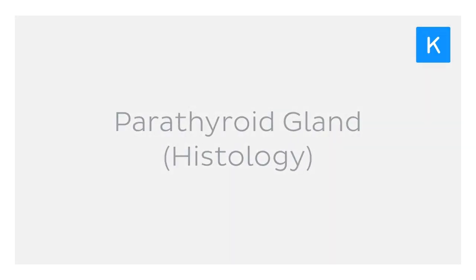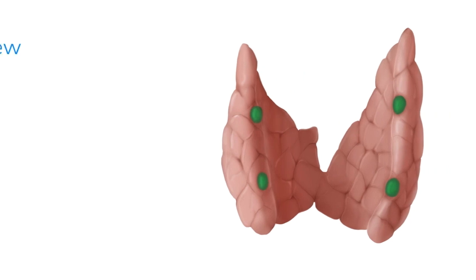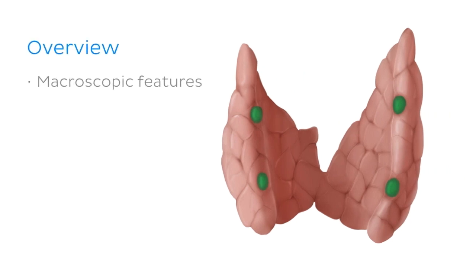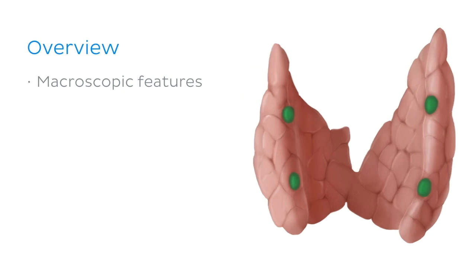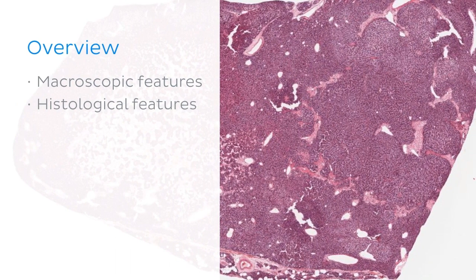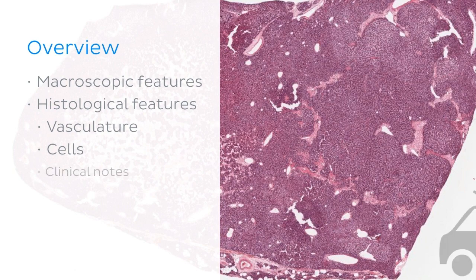Let's find out what they're really made of now as we explore the histology of the parathyroid glands. Here's a quick overview of what we'll cover today. We'll begin by looking at the macroscopic features of the parathyroid glands to remind ourselves about the anatomy without a microscope. We'll then dive into the histological features, including the vasculature found in the parathyroid glands and the cells that make up the gland's parenchyma. Finally, we'll wrap up the tutorial by looking at some clinical notes related to the glands.